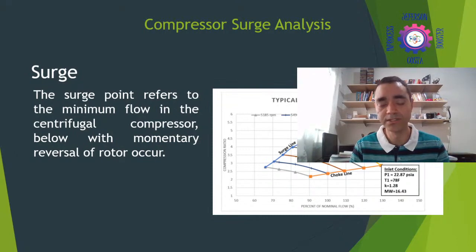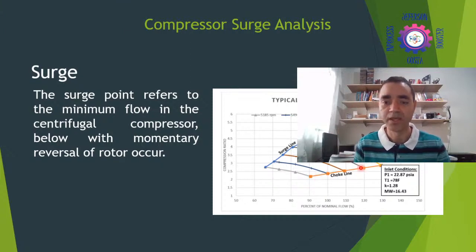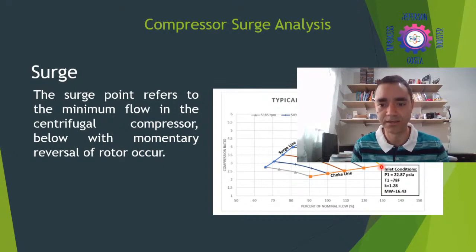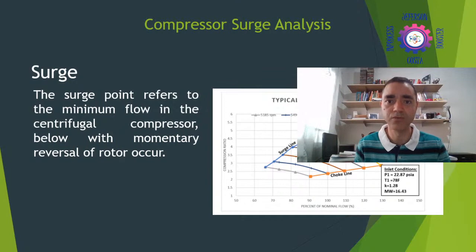On the other hand, when talking about compressors, you must have the system resistance matching what is expected for the compressor operation. If you don't have enough restriction, the compressor can go to the other side of the chart — the shock line or stonewall conditions — meaning the compressor is delivering far more flow than it was designed for, which also causes vibration and can lead to equipment failure. We want to avoid at any cost reaching both the stonewall line and the surge line, and to do that we have some kinds of control.